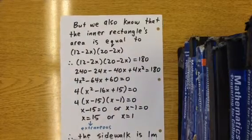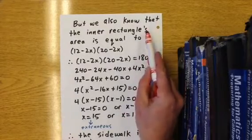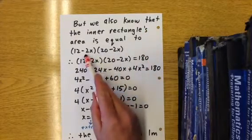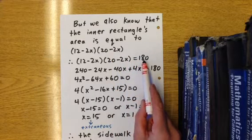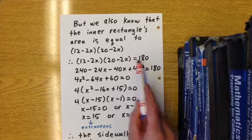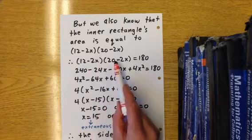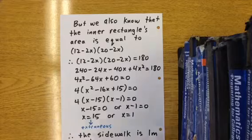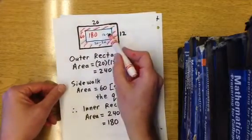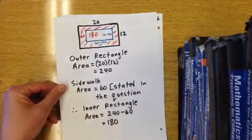Just to explain that verbally a bit more, we know the inner rectangle's area is equal to 12 minus 2x times 20 minus 2x. And since we just established that that area is 180 for the inner rectangle, we have 12 minus 2x times 20 minus 2x equals 180.